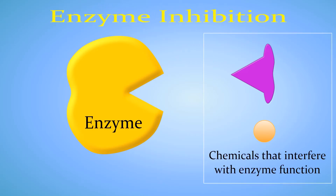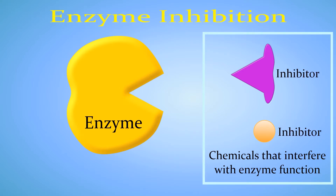Certain chemicals interfere with enzymes and make them not work as well. This is called enzyme inhibition, and the chemicals that cause it are called inhibitors.